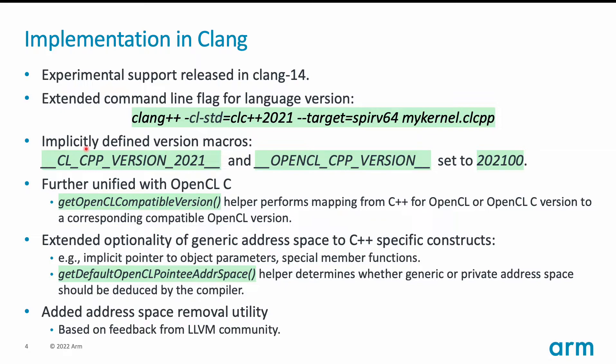We use this helper all over the code base — for example, to handle OpenCL optional features. We also extended the optionality of generic address space to C++-specific constructs. In OpenCL C, generic address space optionality was already handled, but that did not apply to implicit pointer-to-object parameters or to special member function prototypes, so we had to handle this for C++ for OpenCL to work correctly.